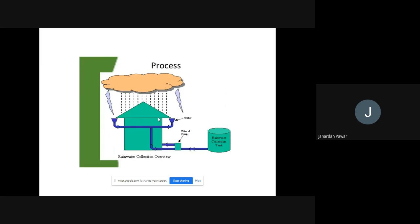Here is an example diagram showing how rainwater can be collected — from this you can understand the exact process of rainwater harvesting. Clouds are there, then rain starts, water falls down, and the water is collected through a pipe from the roof. The collected water is stored in a rainwater harvesting tank. After that, the same water can be reutilized or recycled after a few days for different purposes. This process is called rainwater harvesting and rainwater recycling.